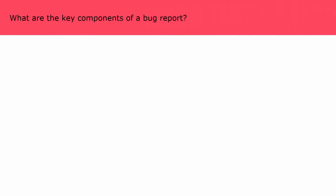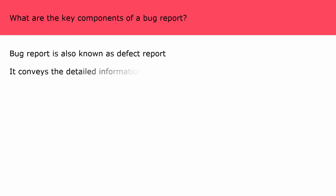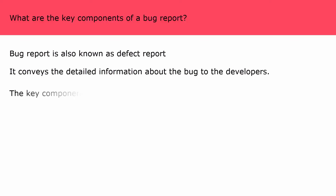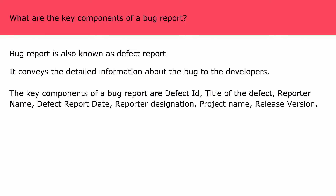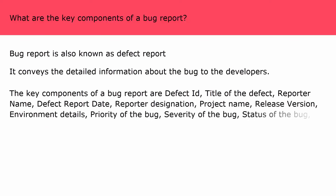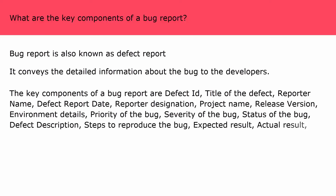What are the key components of a bug report? A bug report is also known as a defect report. It conveys detailed information about the bug to developers and allows them to replicate the bug easily. The key components are: defect ID, title of the defect, reporter name, defect report date, reporter designation, project name, release version, environment details, priority of the bug, severity of the bug, status, defect description, steps to reproduce, expected result, actual result, attachments if any, and defect close date.